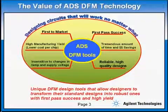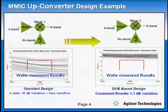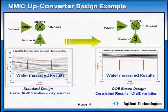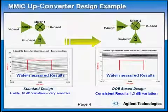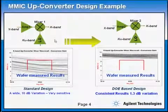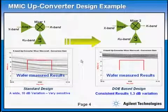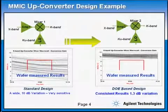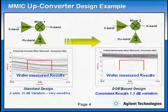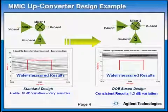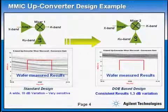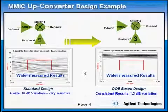Let me now illustrate this DFM concept with a real example. What you see here are wafer-probed results of conversion gain at 20 GHz for two MIMIC upconverters. Both upconverters were placed on the same wafer and processed at the same time. The one on the left used standard design techniques. The one on the right side used DFM, or design of experiment techniques. Notice how the DFM results turned out much tighter, with only 1.3 dB spread due to process variation. But the standard design technique on the left shows a 10 dB variation. Now, which of these two designs would you like to choose?